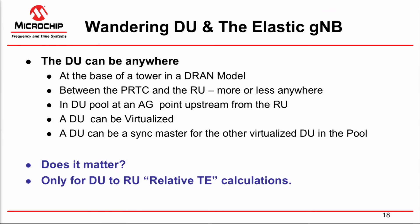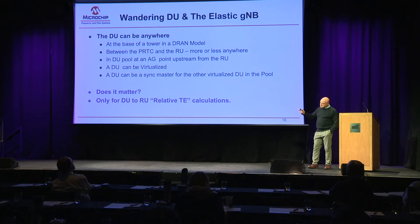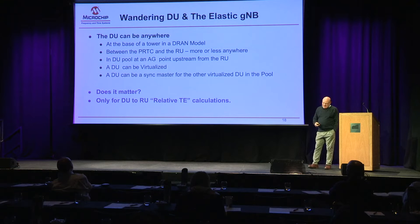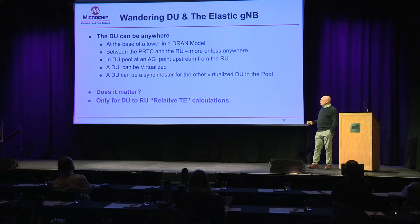Let's go to the DU — the wandering DU and the elastic gNodeB. The DU can be anywhere: it can be at the base of a tower in the DRAN model, it can be between the PRTC and the RU, more or less anywhere. It can be in a DU pool, an aggregation point upstream from the RU. It can be virtualized, and the DU could be a sync master for other virtualized DUs in the pool.